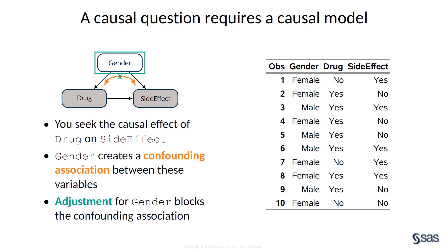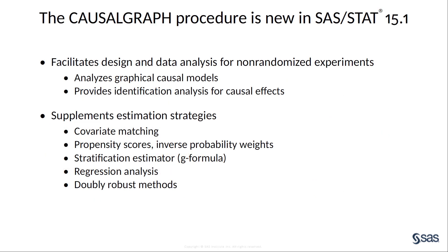This example demonstrates that when you are using data from a non-randomized or observational study in order to estimate a causal effect, your analysis decisions should be informed by causal assumptions. A causal model, in the form of a directed acyclic graph, is a powerful tool to represent these causal assumptions and find a valid estimation strategy. The CausalGraph procedure, new in SAS/STAT 15.1, facilitates study design and data analysis for non-randomized experiments by providing tools for the analysis of graphical causal models, including causal effect identification.